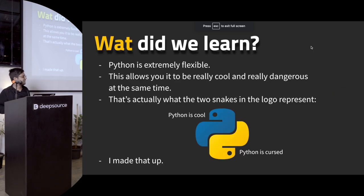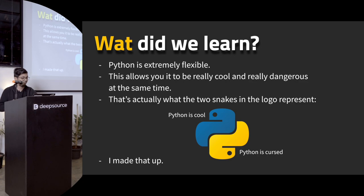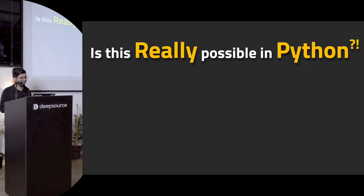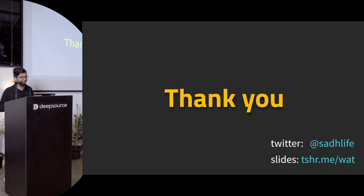So what did we learn here? Python is really flexible — you can do a lot of things in it, which is actually really cool but really dangerous at the same time. That's actually what the two snakes in the logo represent: that Python is cool and Python is fairly cursed. I completely made that up — I have no idea what the snakes actually mean, but I like to think that. So is this really possible in Python? Yeah. That's about it. Follow me on Twitter. Bye.